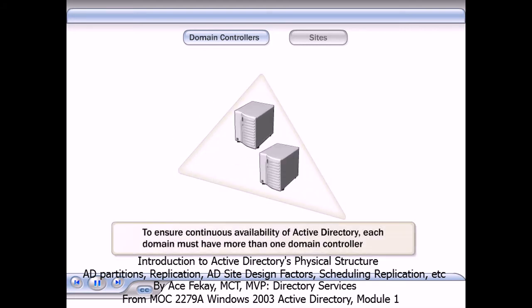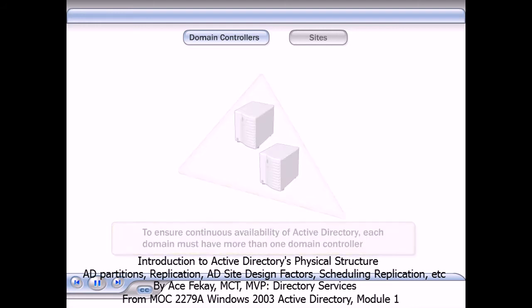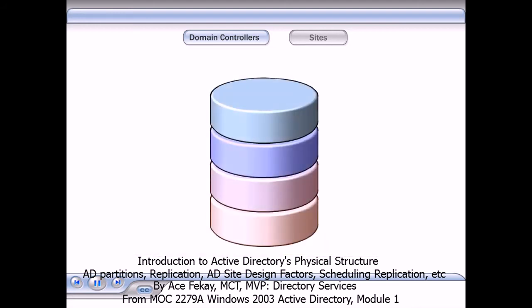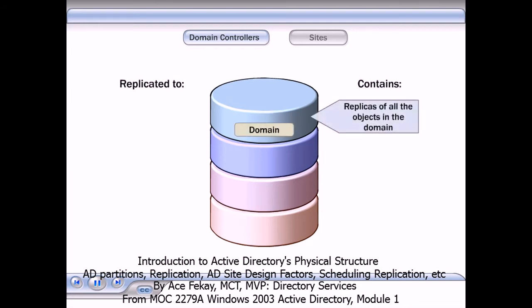To ensure continuous availability of Active Directory, each domain must have more than one domain controller. Each domain controller contains several Active Directory partitions. The domain partition contains replicas of all of the objects in that domain.